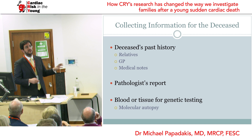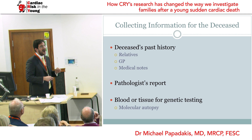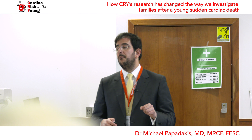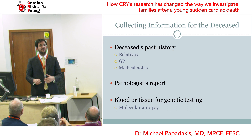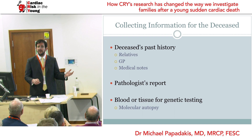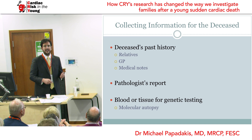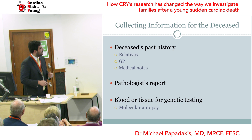The process starts long before the family comes to St. George's. Our nurses contact the family, contact the referring GP, and with the family's permission retrieve notes from previous admissions and A&E attendances. I'll show you examples where you can actually get the diagnosis before the family arrives. The pathologist's report is critically important, as I'll show in a moment. We also try to obtain blood or tissue for genetic testing — what we call the molecular autopsy of the deceased.